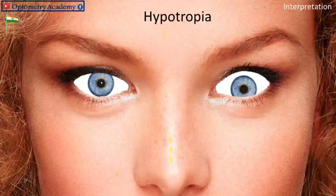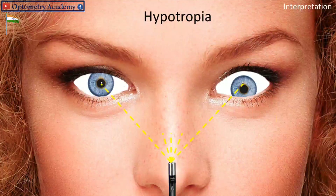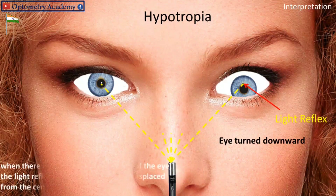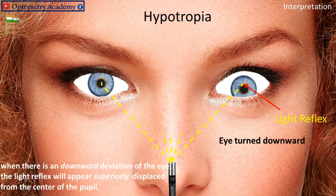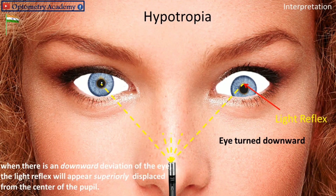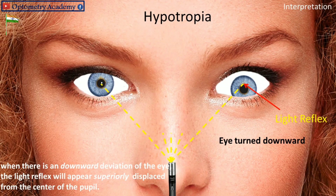Hypotropia — eye turned downward: When there is a downward deviation of the eye, the light reflex will appear superiorly displaced from the center of the pupil.